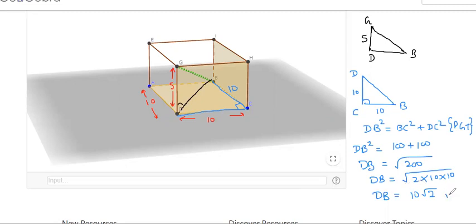If it is meters, right, meter. So this is my DB. DB is 10 root 2. So this becomes my 10 root 2, 10 root 2. Now I can use again Pythagorean theorem over here. I'm doing it that side.